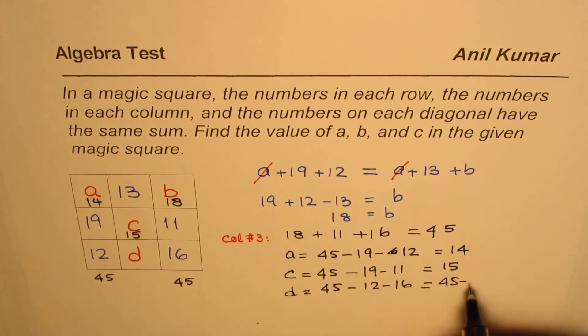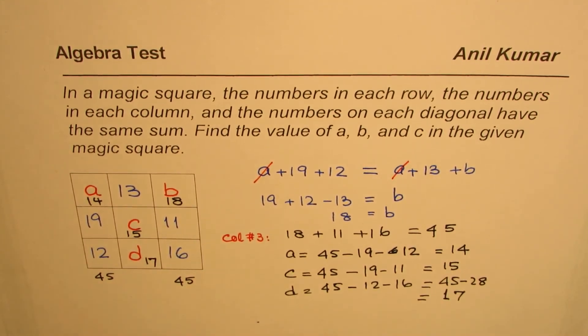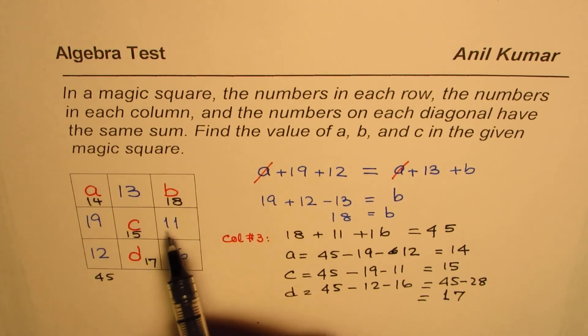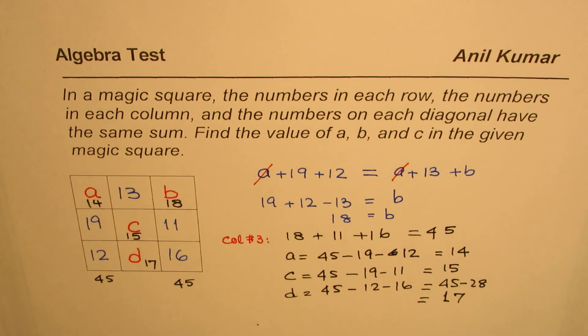45 minus 28. 15 take away 8 is 7, and 3 take away 2 is 1. So we get 17. These are the numbers from 11 to 19 which will give us the required criteria.